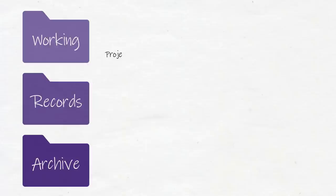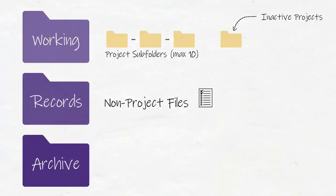The Working folder contains subfolders for each project I'm working on. If I have more than ten projects, I make an Inactive Projects folder and put any inactive projects in there. The Records folder is a place for all non-project related photos and documents I want to keep, like work procedures or photos of my family. The Archive folder is for all old project files that I may need to complete future projects.